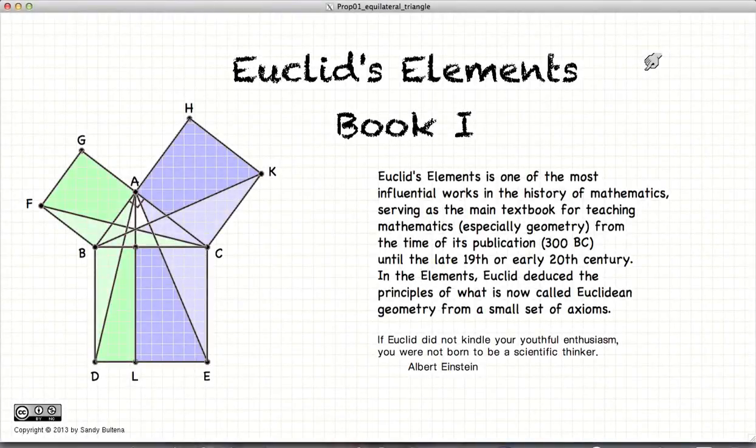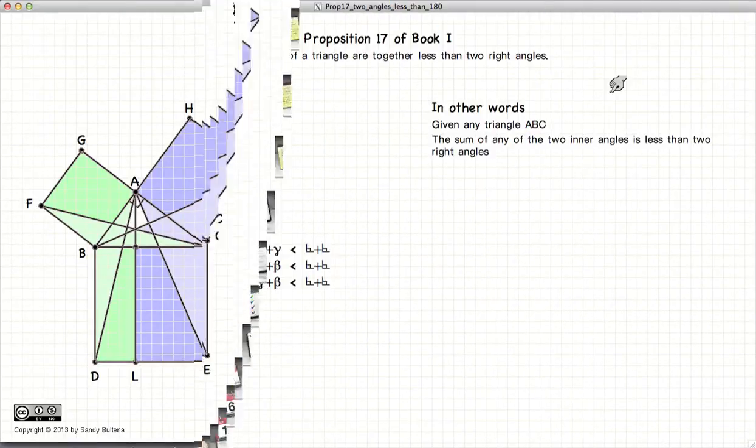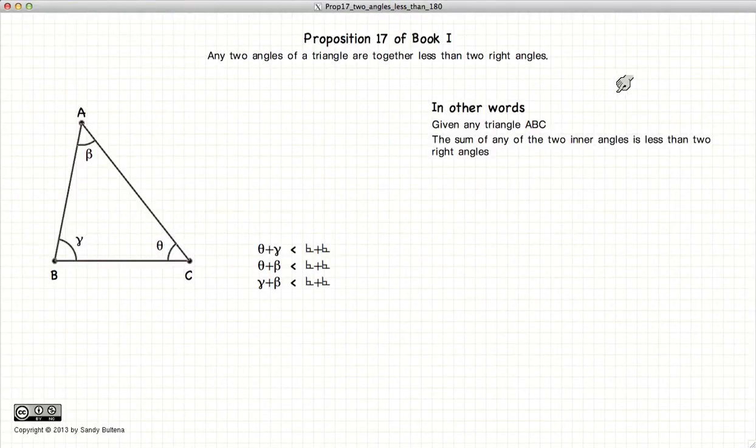Hi and welcome to my tutorials on Euclid's Elements Book 1. This video presentation is going to be on Proposition 17 of Book 1 which states that if you have a triangle, any two angles within the triangle sum to something less than two right angles.